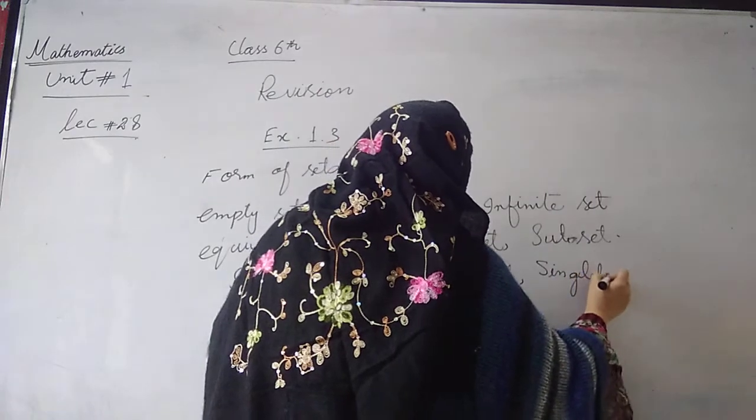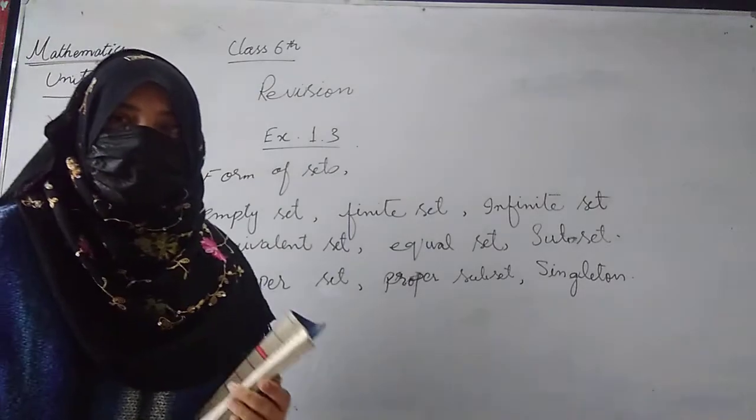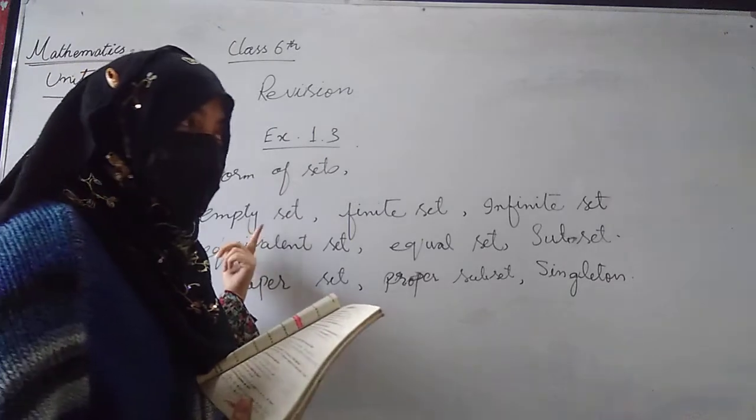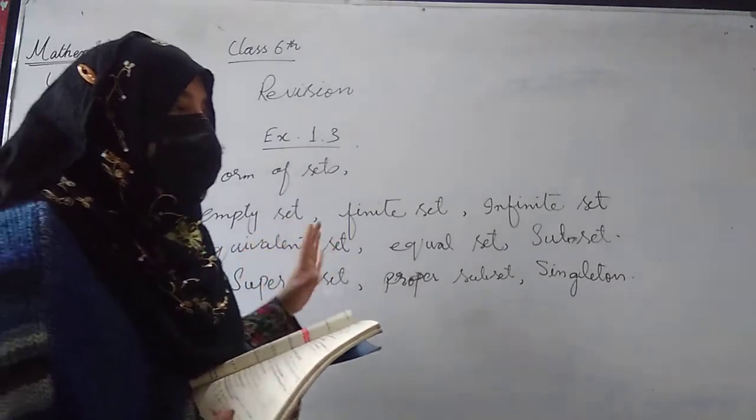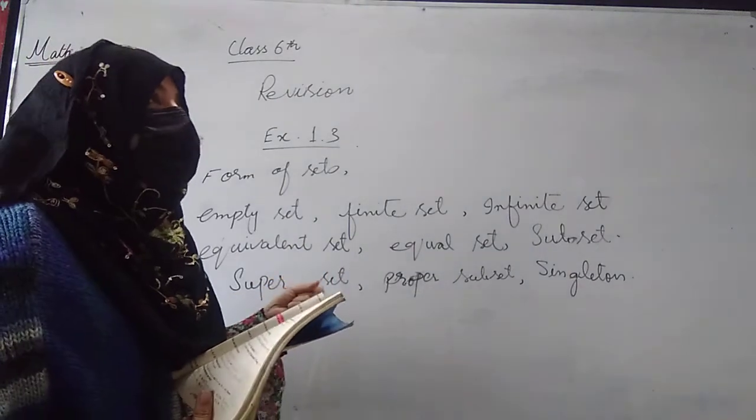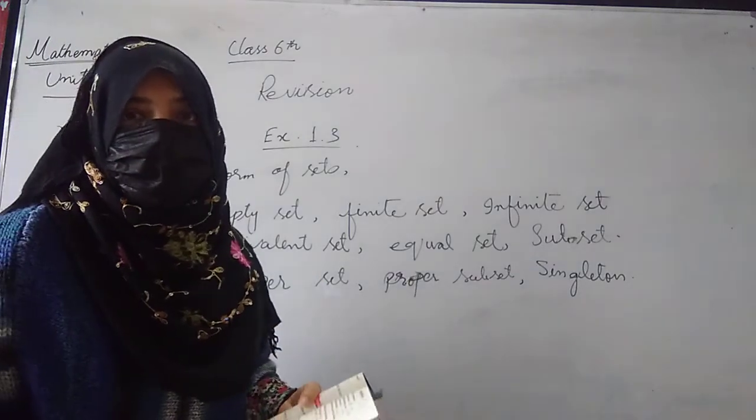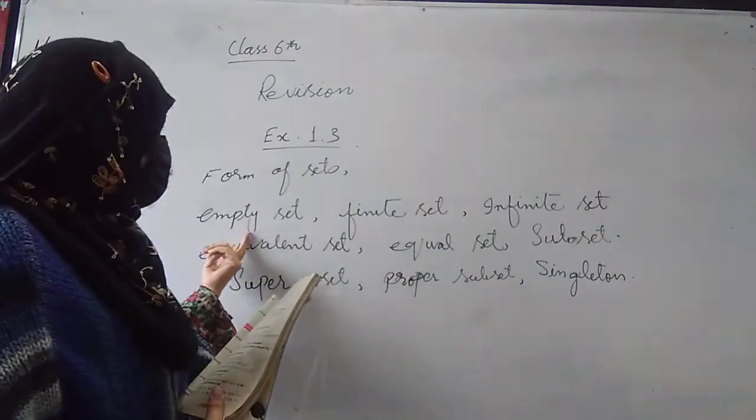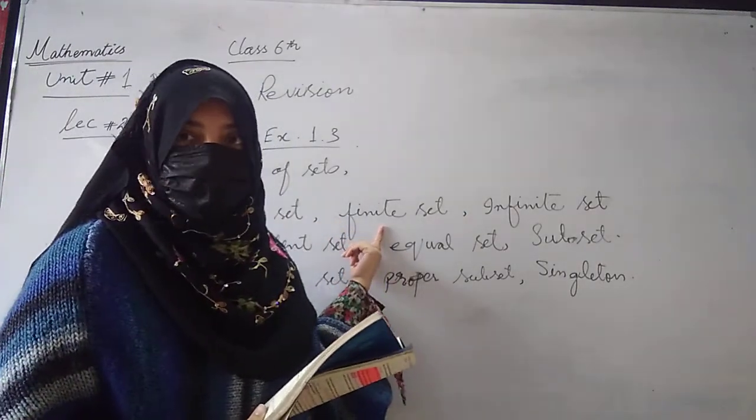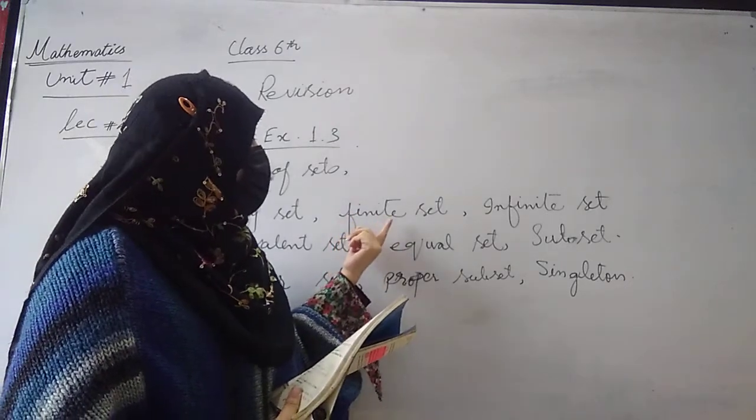I will revise some sets which is not empty set. Set of whole numbers between 2 and 3. 2 and 3 have no whole number, so here finite set. Limited number of elements. Number of elements limited, finite set.